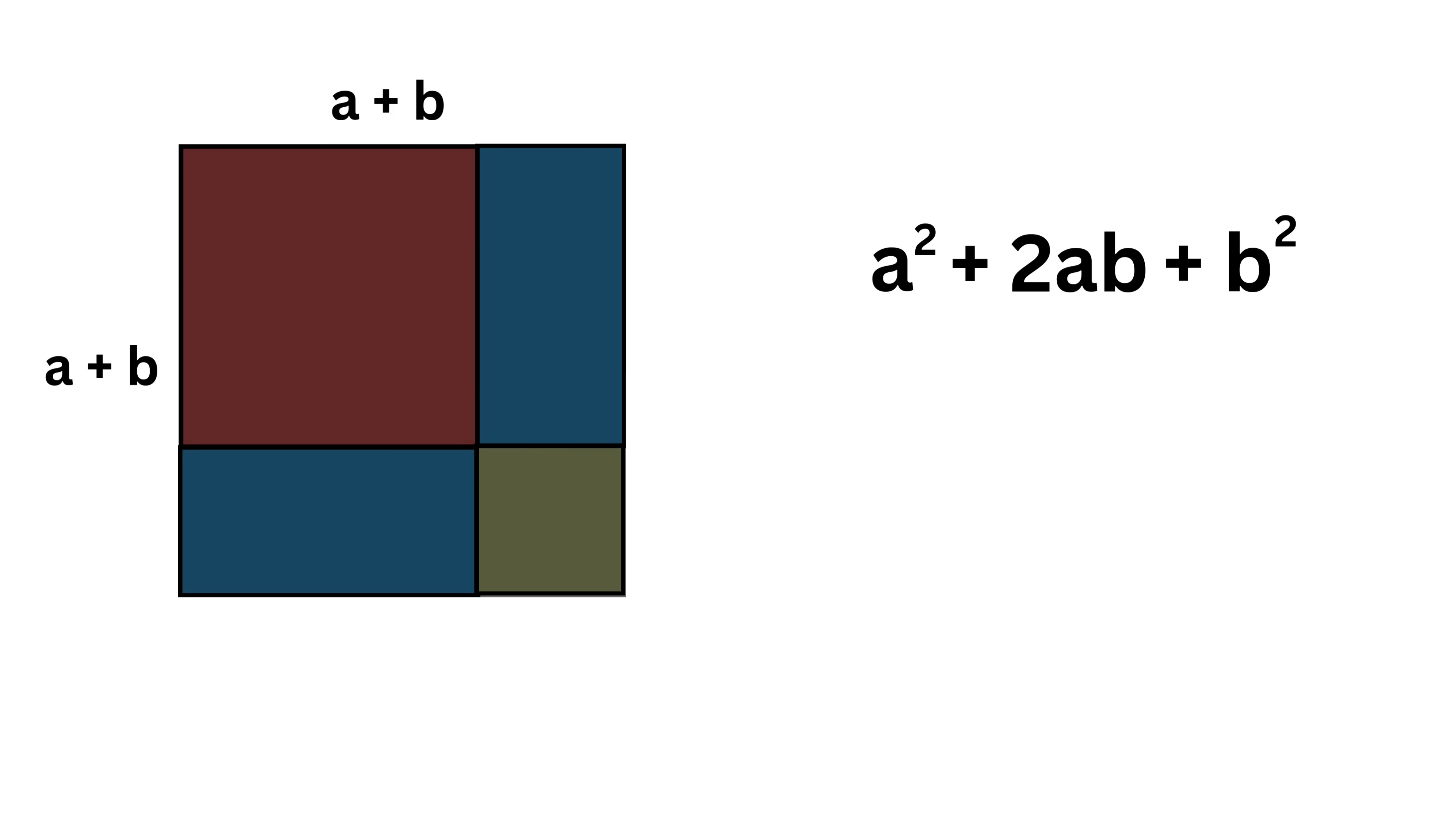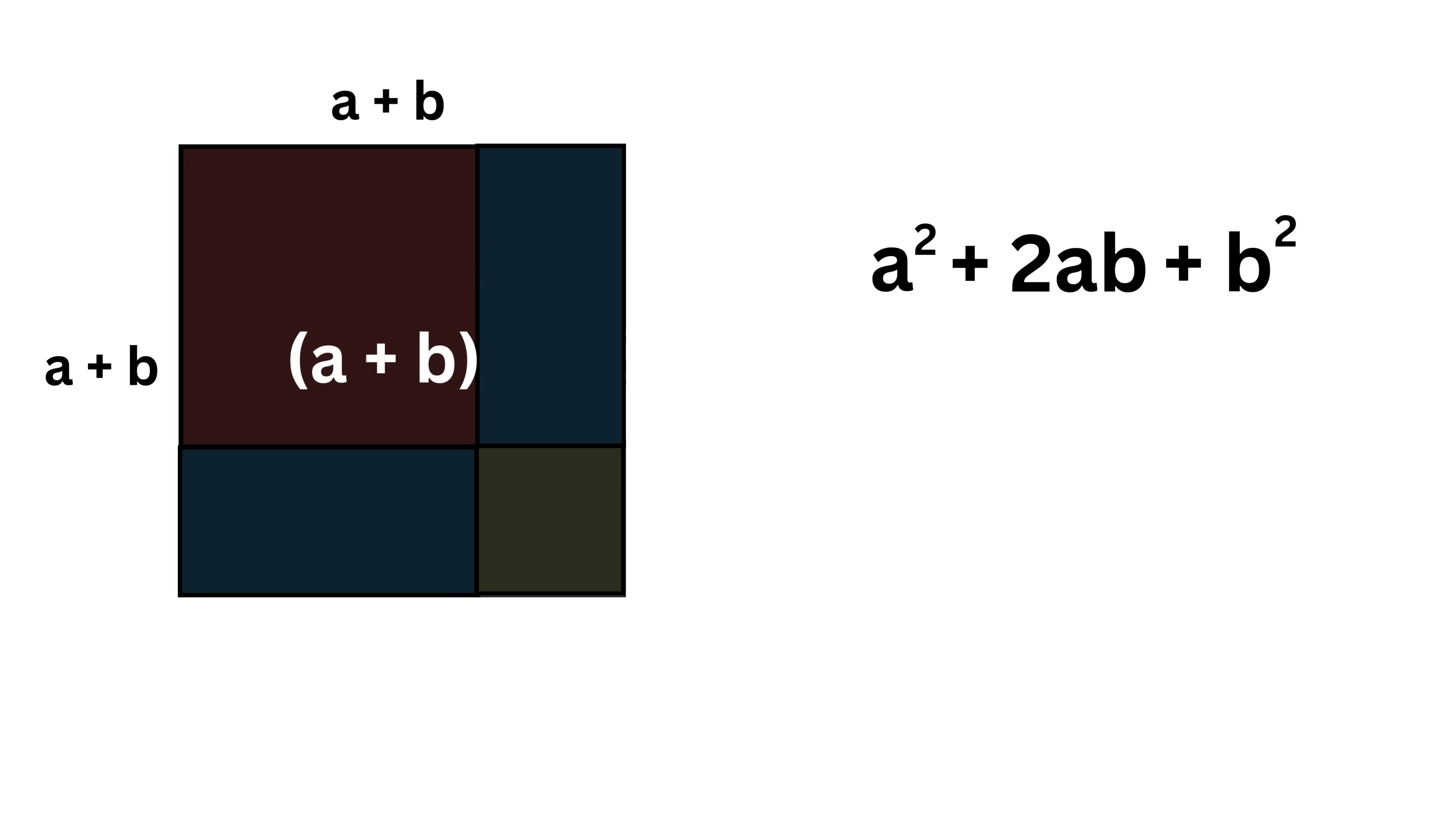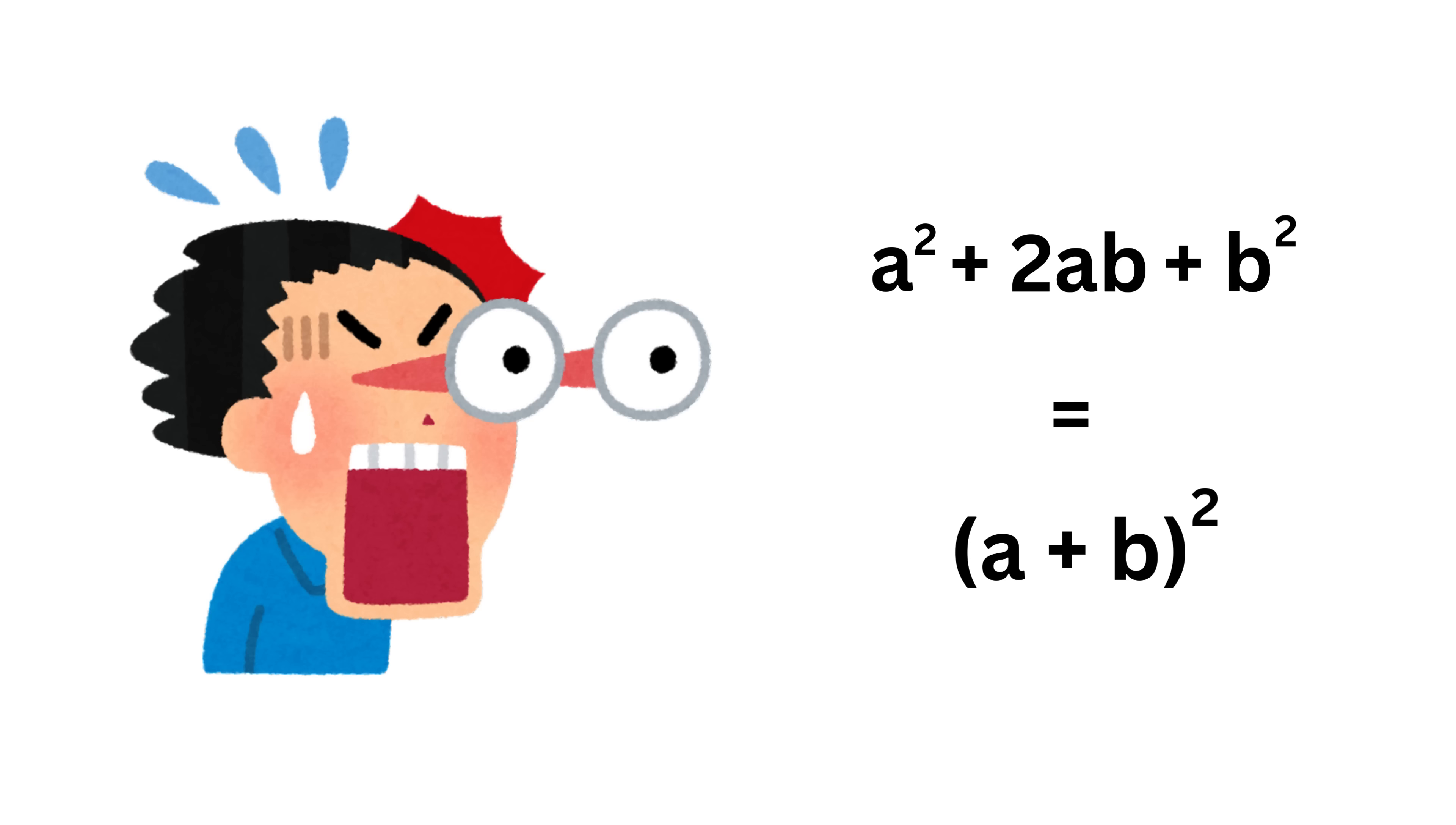Now look at this entire square. This is a and this is b, so this square has side length a + b, and thus its area will be (a + b)². Wow, this is the secret behind the (a + b)² formula.